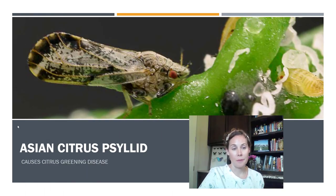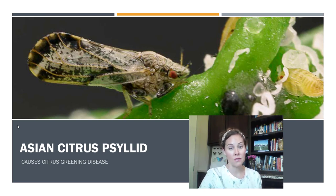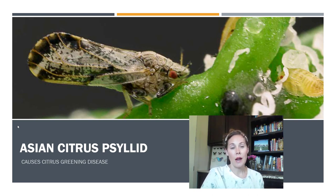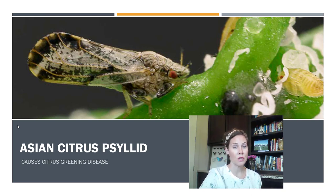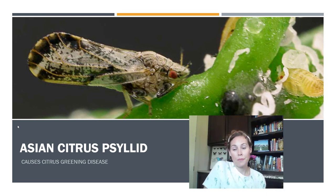One major problem in the citrus industry is an insect called the Asian citrus psyllid. The Asian citrus psyllid causes a disease called citrus greening. The insect itself is not necessarily damaging, but what it vectors and transmits is very damaging. In your backyard, losing a citrus tree is not devastating, but if you're a citrus grower you can absolutely lose your entire crop and it will take years to replace what you've lost. If we can control the psyllid in backyard situations, we can help prevent major infestations in commercial settings — especially important if you live near a lot of citrus growers.